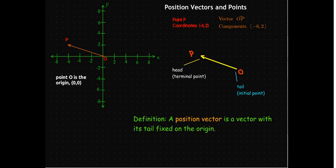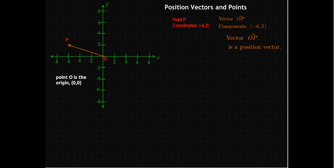A position vector is a vector with its tail fixed on the origin. Our vector OP is an example of a position vector. And notice that when we write down a position vector versus coordinates, the exact same numbers appear.